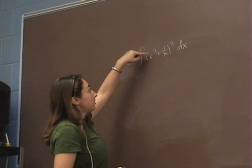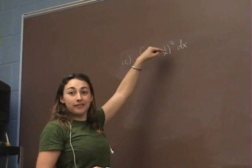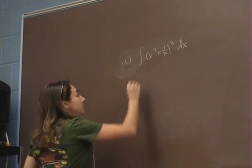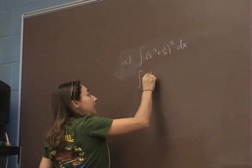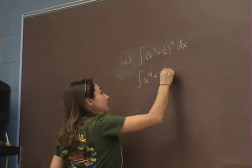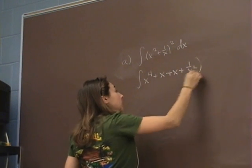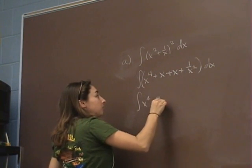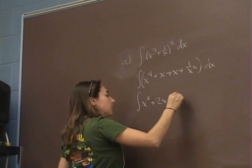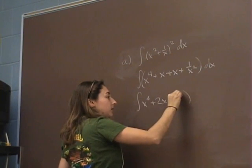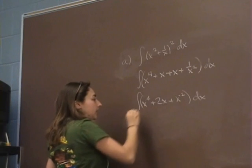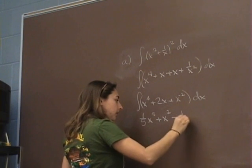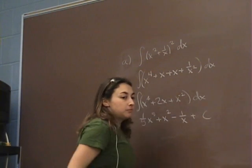When I multiply it out, is it going to be x squared squared plus 1 over x squared? No, because you actually have to distribute. So this should be the integral of x to the fourth plus x plus x plus 1 over x squared dx, which I'll rewrite as x to the negative 2.